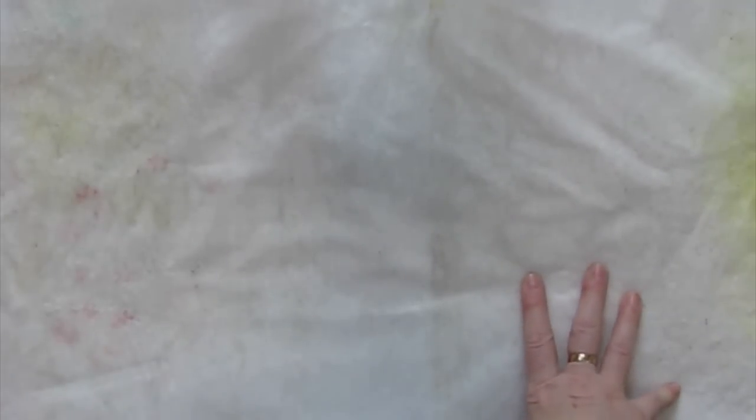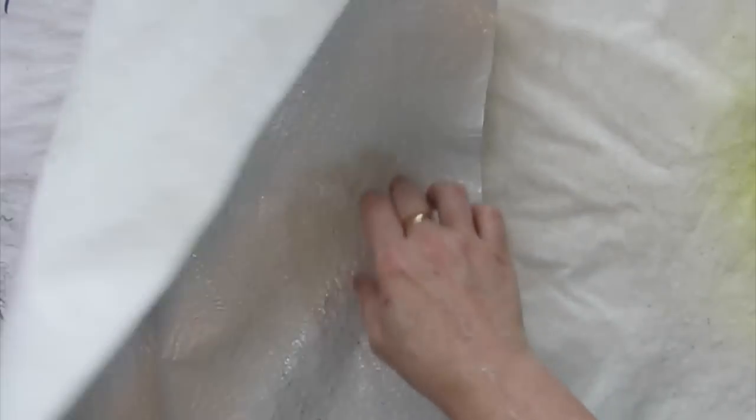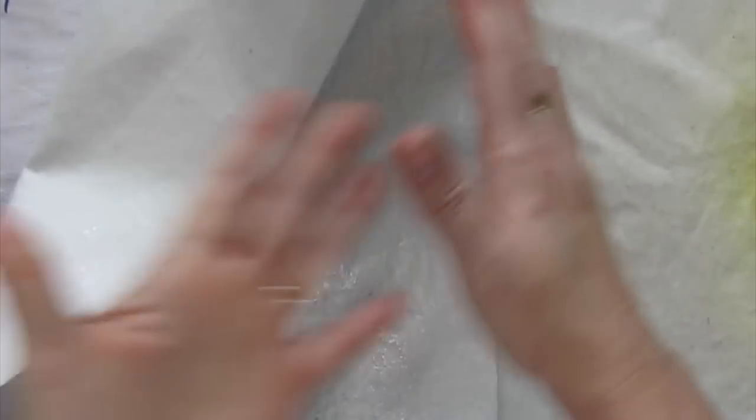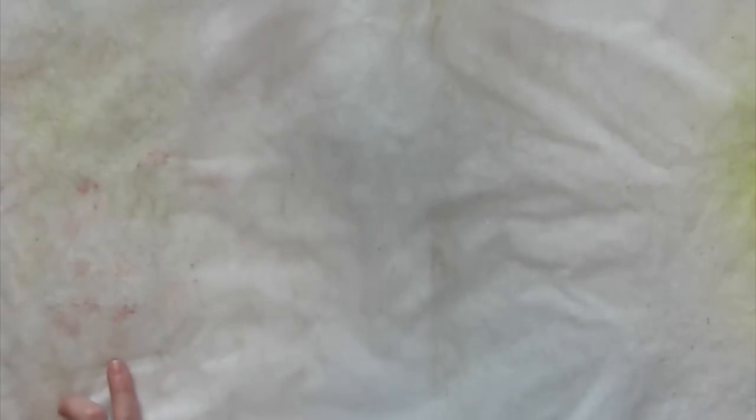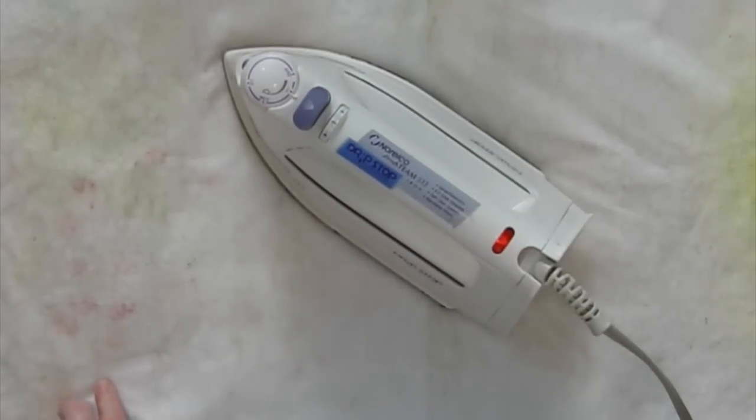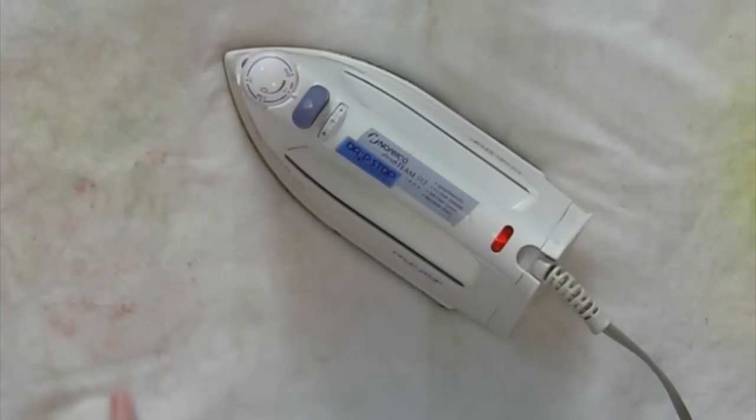For this technique you are going to need something to iron on. This is a piece of that heat-proof stuff that is in between the layers of the fabric on an ironing board cover. If you want to make your own ironing board cover you can buy this. I wish I knew what it was called, that would be helpful. But it's completely heat-proof. You want your iron set on high, on hot, all the way. And this won't hurt it. You can iron on it all day long.